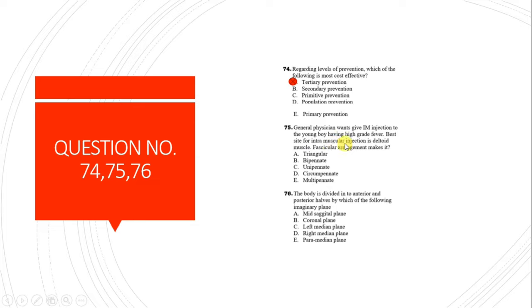Question 75: The best site for an intramuscular injection is the deltoid muscle. The deltoid muscle is multipennate because its fascicles or fibers run in many directions.